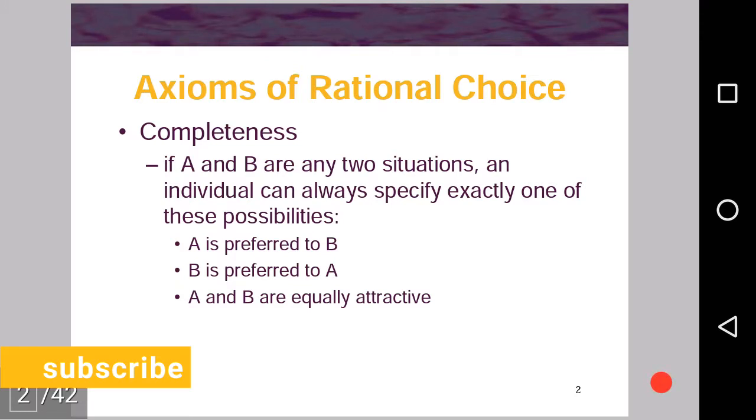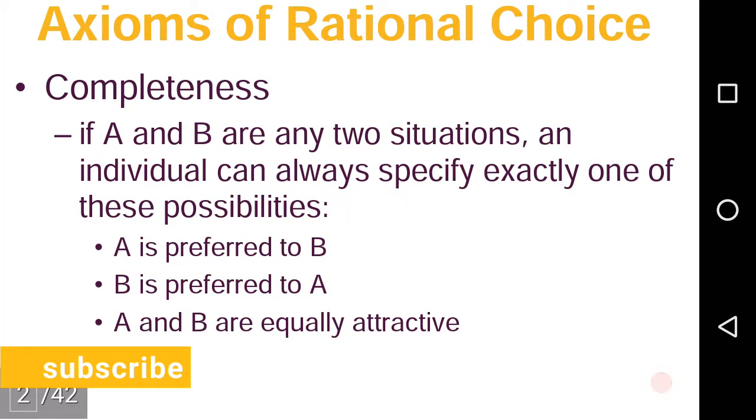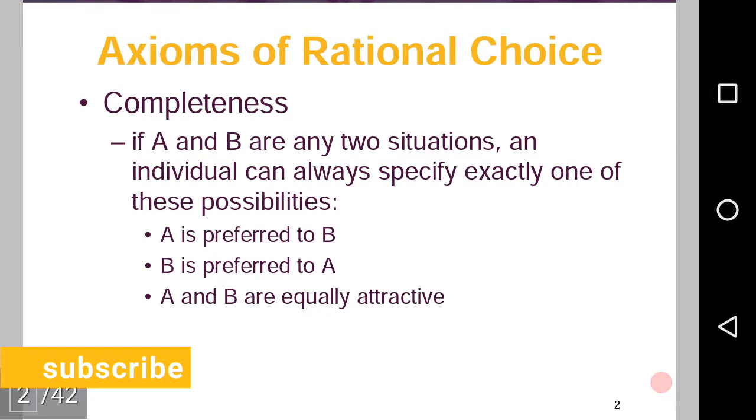Completeness is that if A and B are any two situations or two commodities, an individual can always specify exactly one of these following possibilities: that either A is preferred to B, that is commodity A or situation A is preferred to B, or B is preferred to A, or A and B are equally attractive.